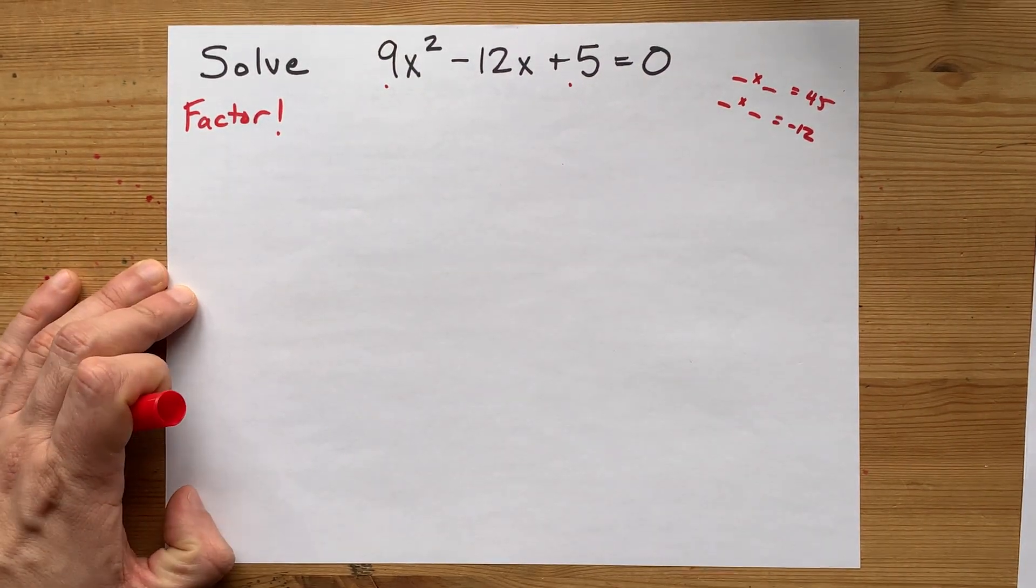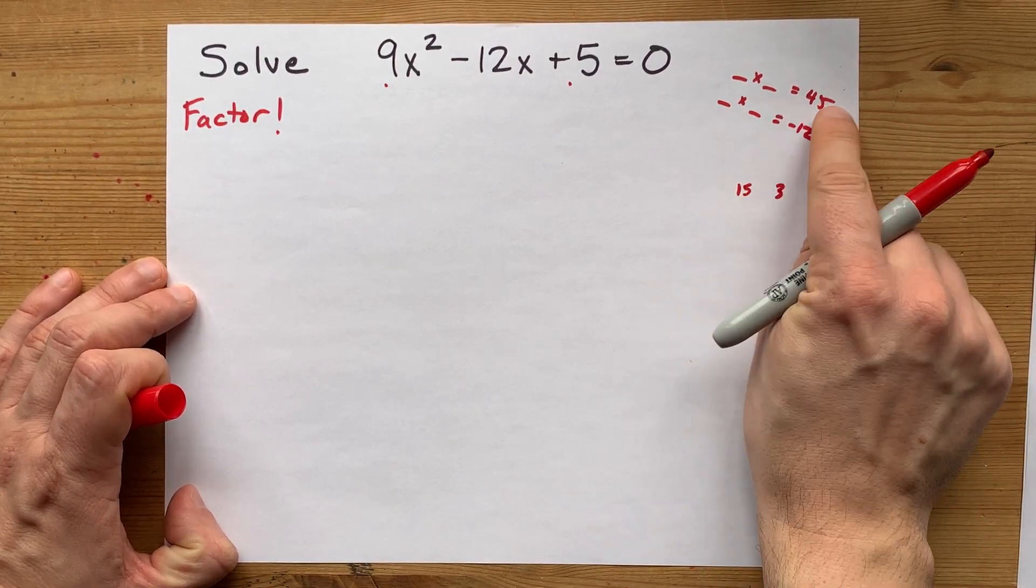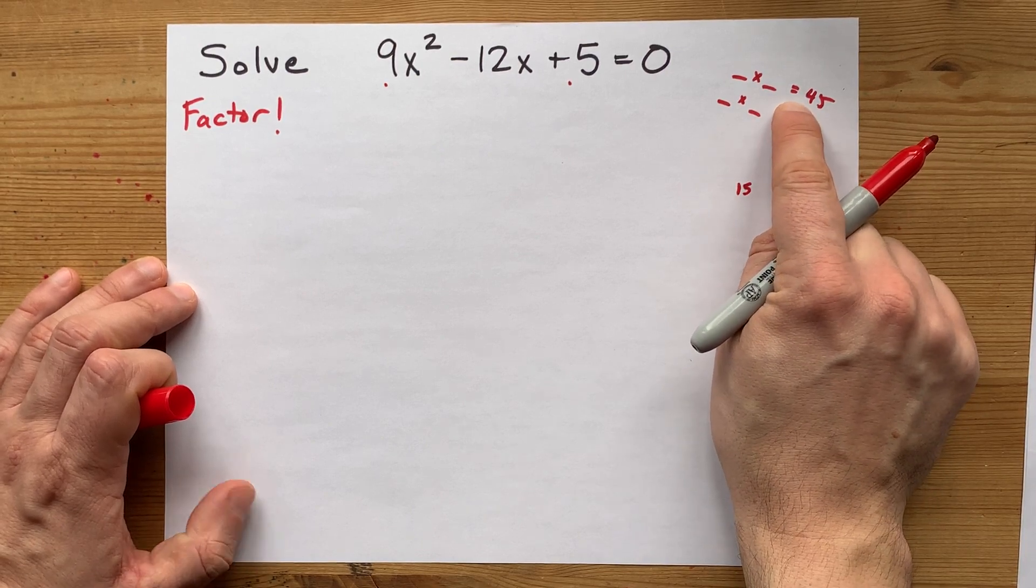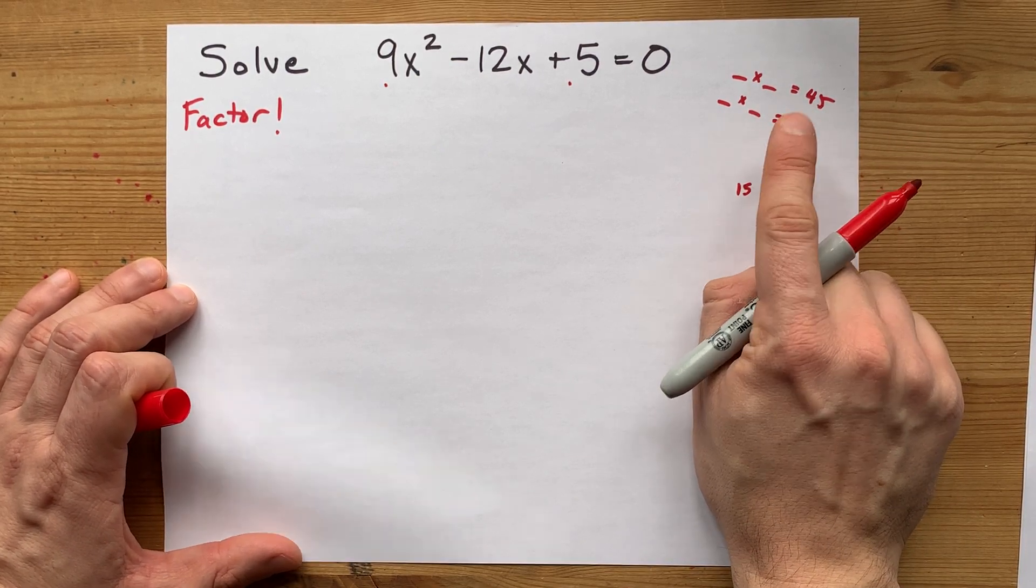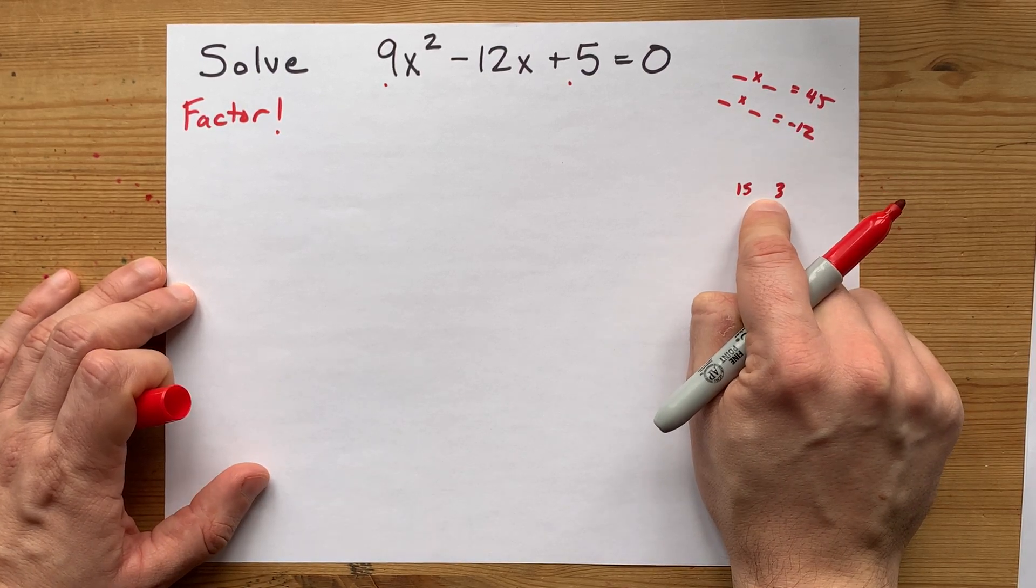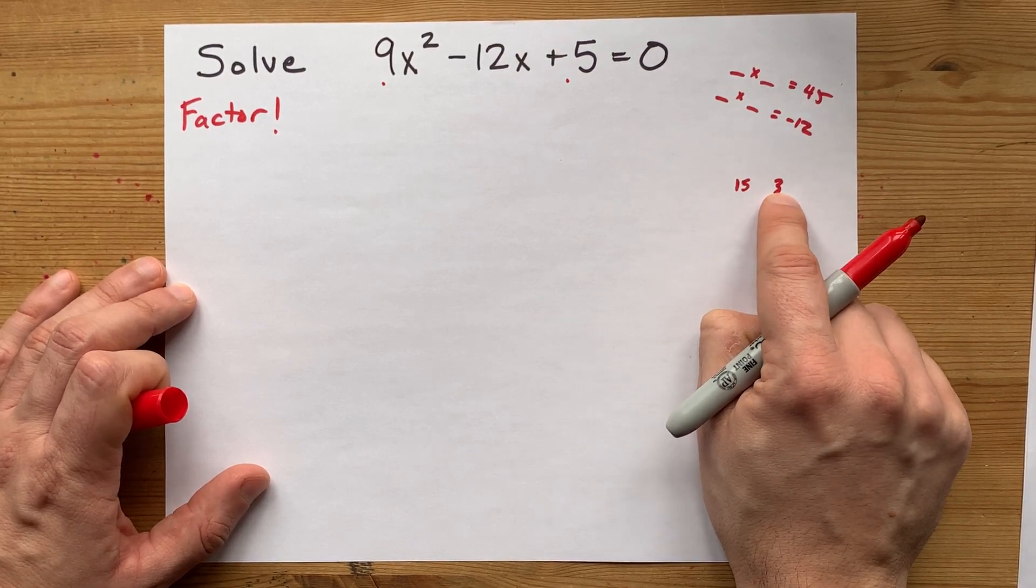Now, the first numbers that come to my head here are 15 and 3. They multiply to 45, but I can't get them to multiply to a positive if they add to a negative. If they have to add to a negative, one of them has to be negative. And they're multiplying to a positive, so they both have to be negative.